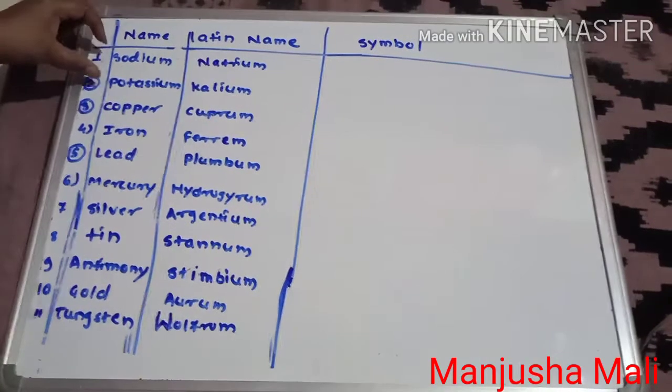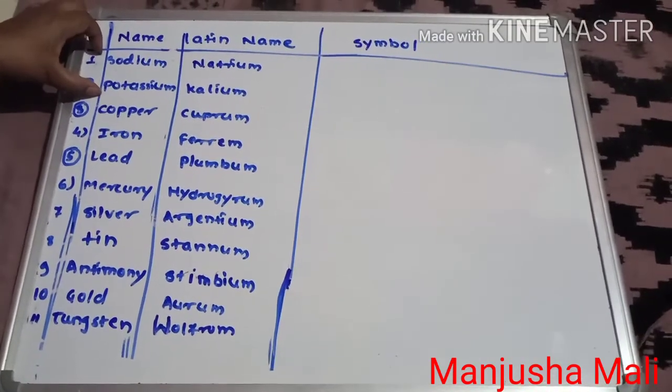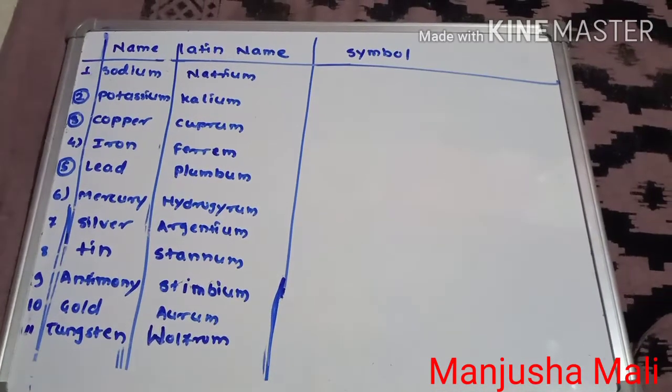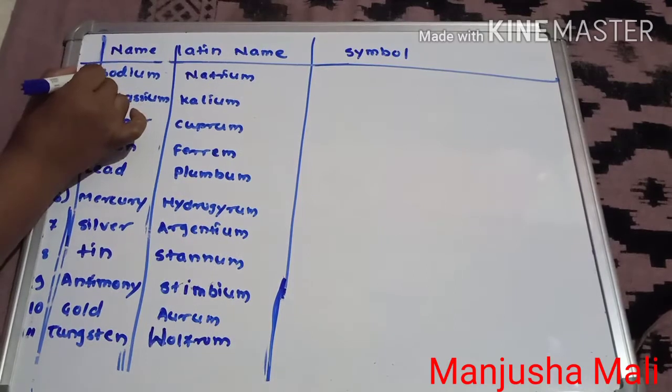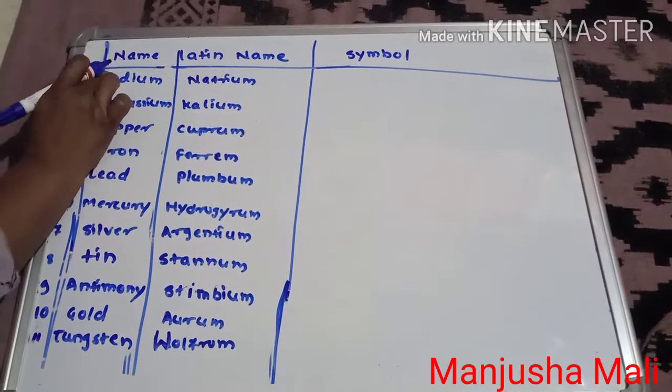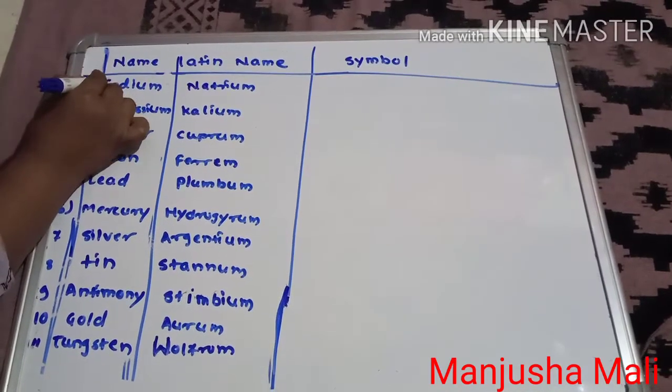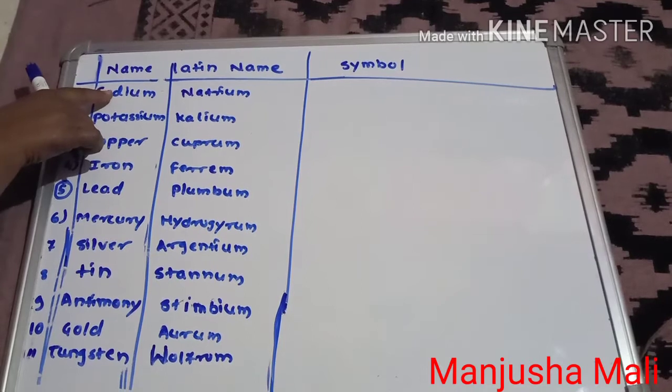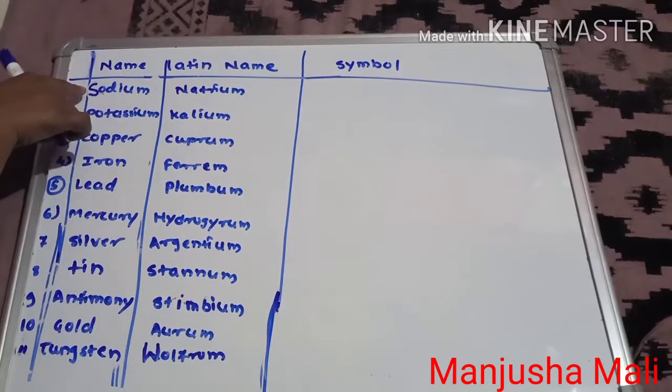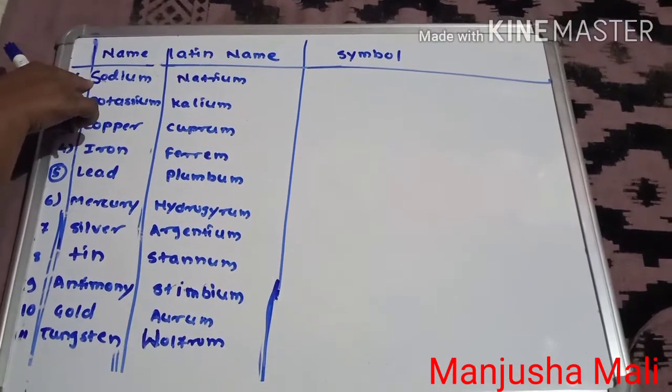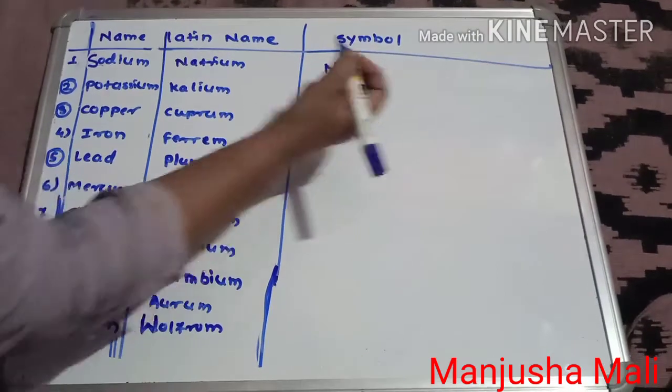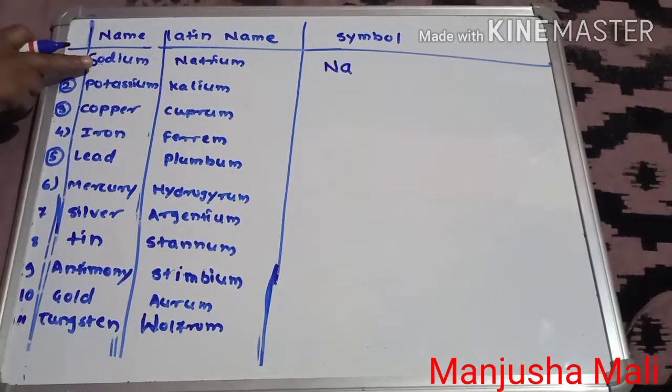Let's see. First two most important symbols that you must know and that is also confusing. One is sodium. Mostly students used to write the symbol of sodium as S-O because the spelling of sodium begins with S. So here the sodium is having the Latin name Natrium. So symbol of sodium doesn't begin with S but it begins with N. So symbol of sodium is Na. And let's see what we have in the question of sodium.